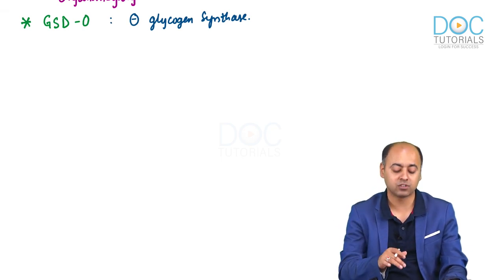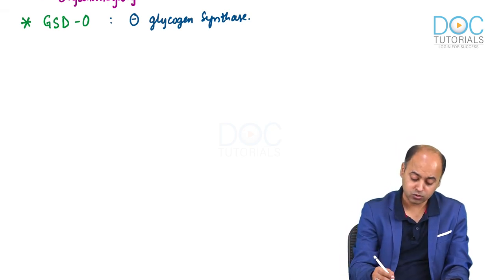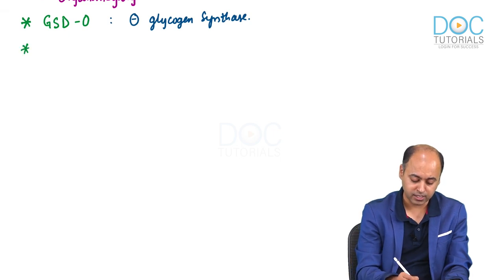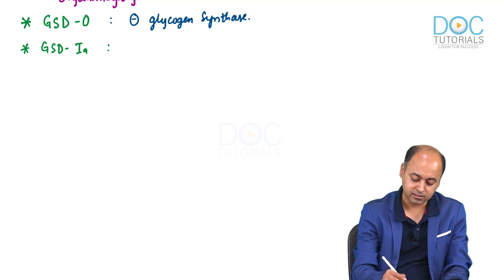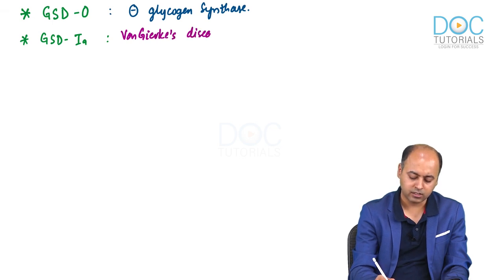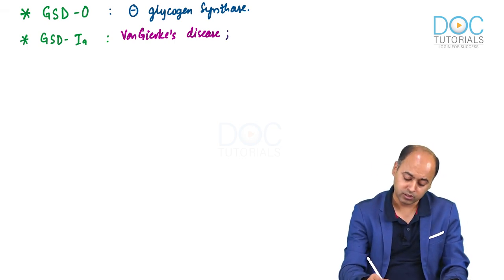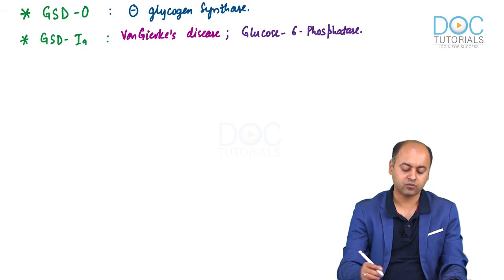GSD 0 is a newer discovery and we do not have a traditional name for it. Moving on to GSD type 1, better known as GSD type 1A, traditionally described as Von Gierke's disease. In Von Gierke's disease, the deficient enzyme is glucose-6-phosphatase.